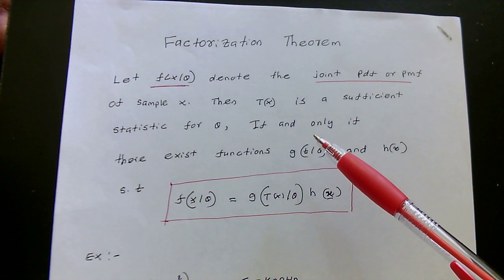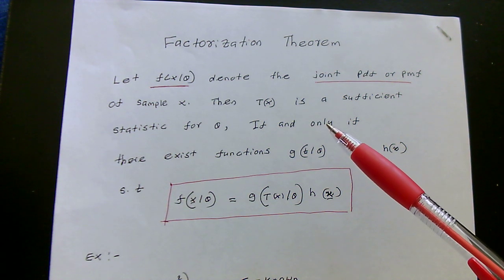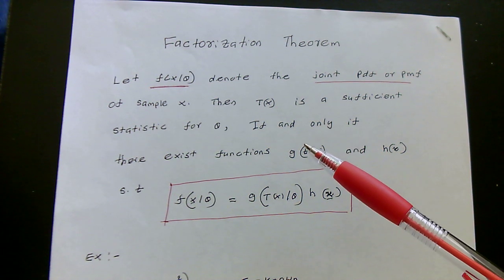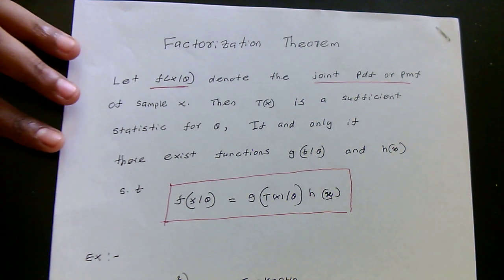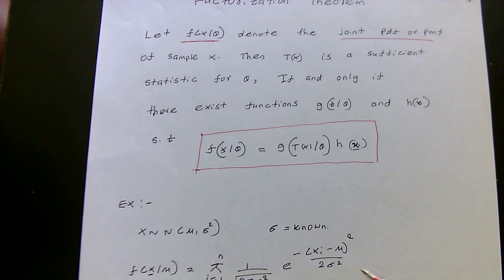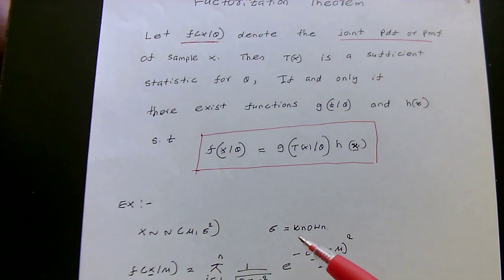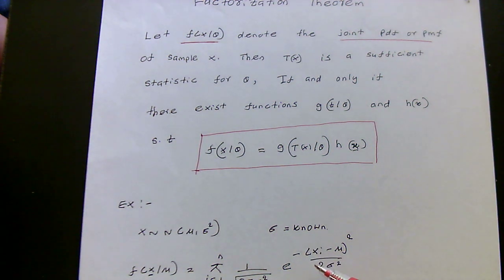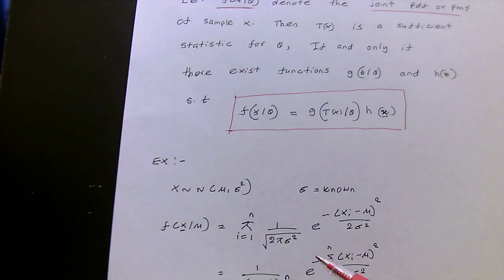When using the factorization theorem to find the sufficient statistic, what we need to do is rewrite our function in such a way that we can identify two such functions. We will demonstrate this using an example. So our first example: let's say we have n observations that are independent and identically distributed, where these random variables have a normal distribution with mean mu and variance sigma squared, where sigma is a known value. The only unknown parameter is the population mean mu. The first step is to write the joint probability density function.